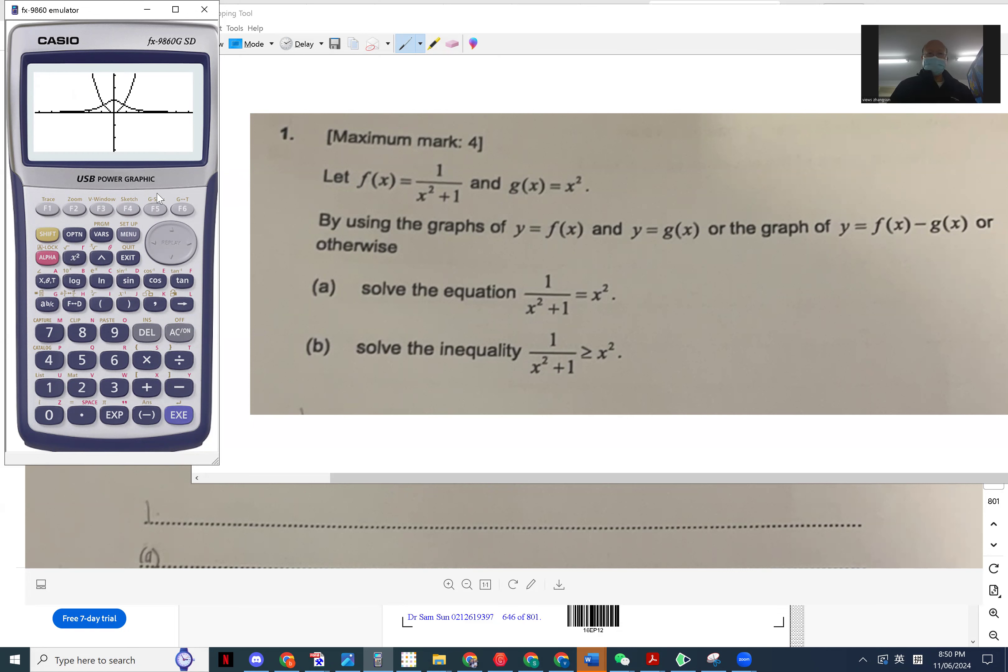F5 is G-solve, graph solver. F5, intersection. Negative 0.786, and next to the right, 0.786.